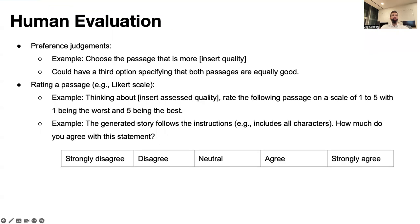One way to do human evaluation is through preference judgments. For example, we can ask the worker to choose the passage that is more, for example, coherent or fluent. And we can also give them a third option, specifying that both passages are equally good.